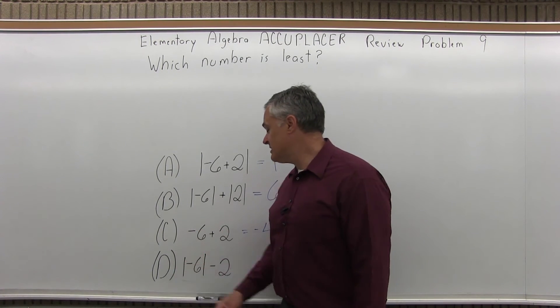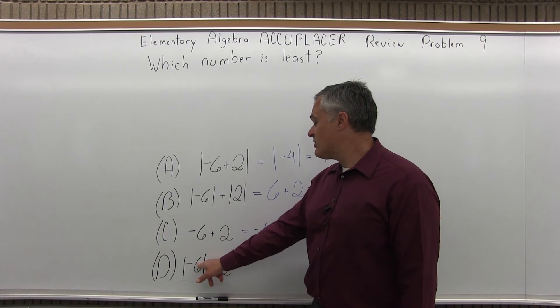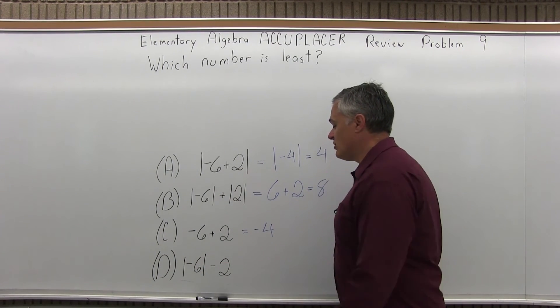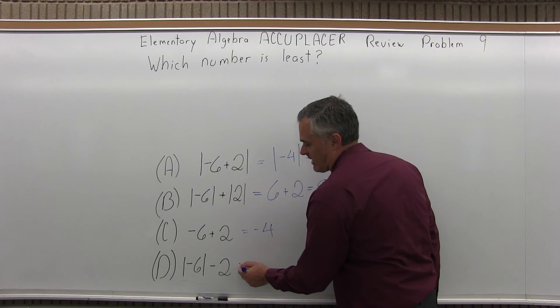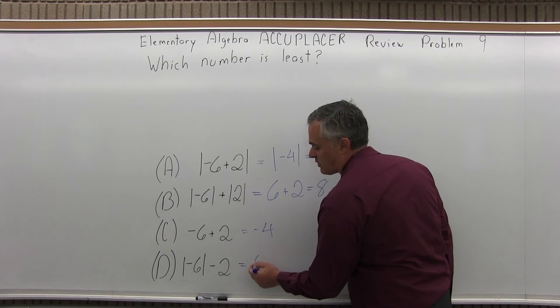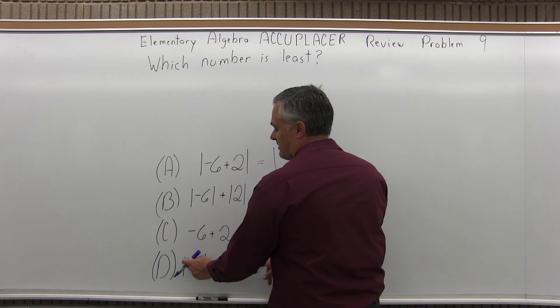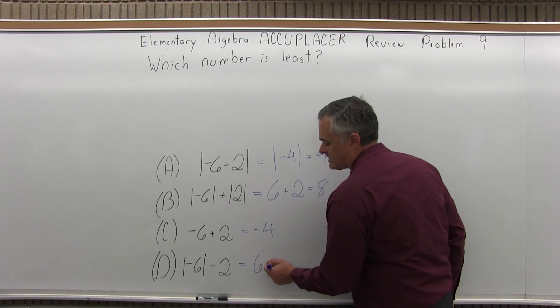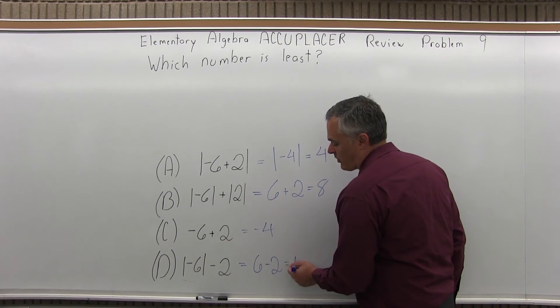And finally option D, you have absolute value of negative 6 then minus 2 with no absolute value. So absolute value of negative 6 is just positive 6. Again keep the number the same, make sure it's positive, and you'll have 6 minus 2, which is 4.